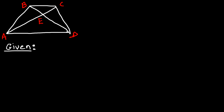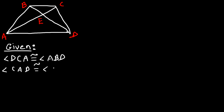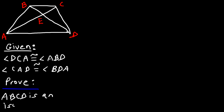Let's consider another example. We're going to use the same letters A, B, C, D, and E. In this problem the given information is: angle DCA is congruent to angle ABD, and also angle CAD is congruent to angle BDA. With this information, let's prove that ABCD is an isosceles trapezoid.